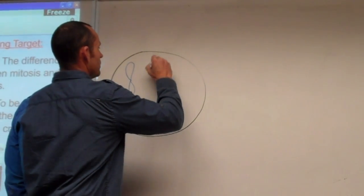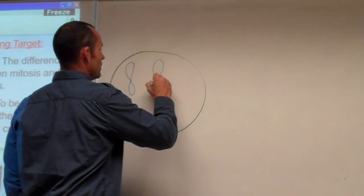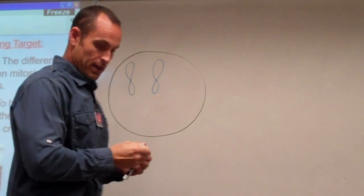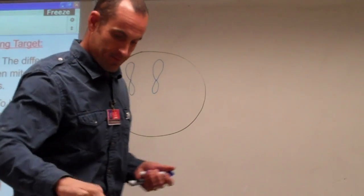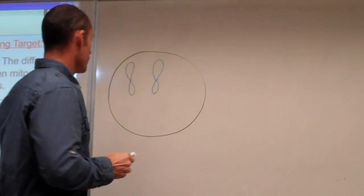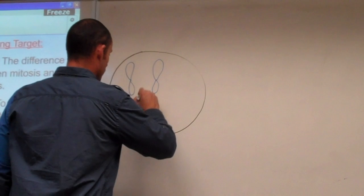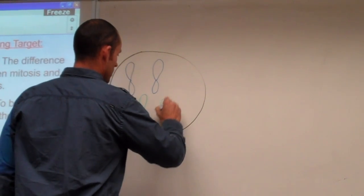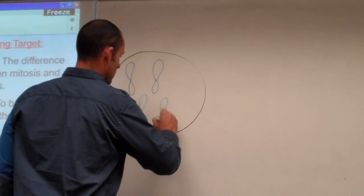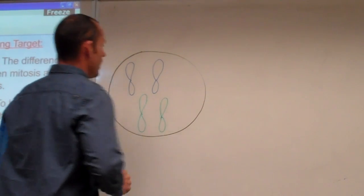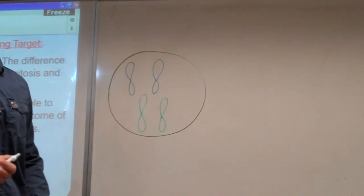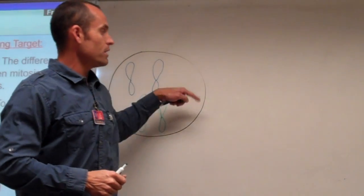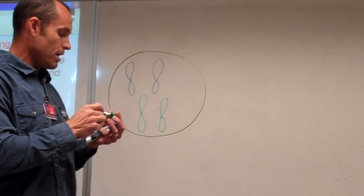I'm going to draw two pairs of chromosomes and try to keep them the same size. We'll do one in blue and one set in green. This will be the same cell that we start off with each way. We'll split it off going one direction for mitosis, and one direction the other way.